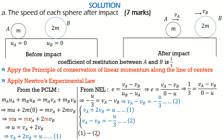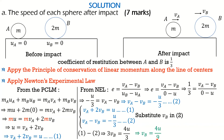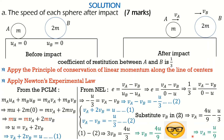Taking equation 1 minus equation 2, VA cancels. This gives 3VB = U − (−U/3) = 4U/3. Therefore the velocity of B after impact is 4U/9. Substituting VB back into equation 2, we get VA = −U/3 + VB, which gives VA = VB − U/3. Substituting, we obtain the velocities of A and B after impact, completing part A which was allocated seven marks.